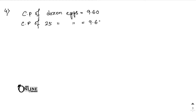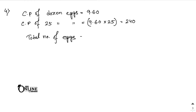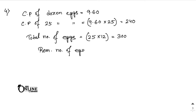CP of 25 dozen eggs equals 9.60 into 25, which equals 240. Total number of eggs: 25 dozens means 25 into 12, which equals 300. Since 30 eggs were broken, the remaining number of eggs equals 300 minus 30, which equals 270.